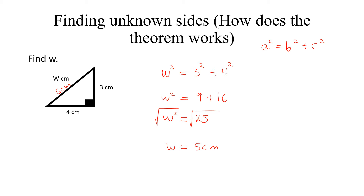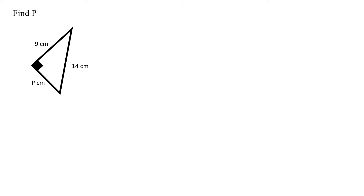Let's go to the next one. Here we're given 9 centimeters, 14 centimeters, and p centimeters, and we're asked to find p. Remember the formula: the hypotenuse squared equals the sum of the other two sides. In this case we have 14 squared, since 14 is the side facing the 90 degrees — the hypotenuse. So 14 squared equals 9 squared plus p squared. We're trying to find p, and that is one of the beauties of Pythagoras' theorem.